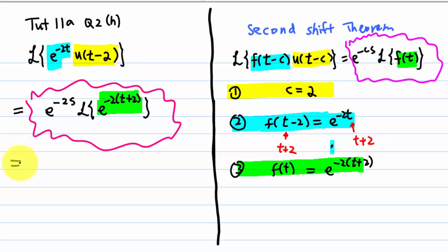Now, this is equal to Laplace transform of e to the minus 2t times e to the minus 4.